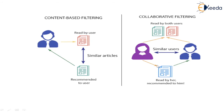There are two main models in recommendation systems: content-based filtering and collaborative filtering. In content-based filtering, suppose a reader is reading some kind of content — we recommend similar types of content to that user. In collaborative filtering, user A reads some content and user B reads some other content. When user A also reads the second type of content, that second content is then recommended to user B.